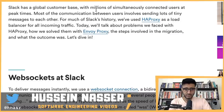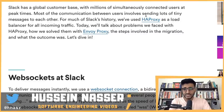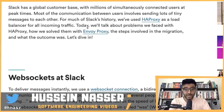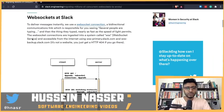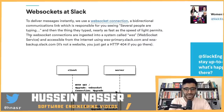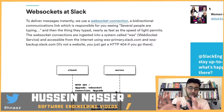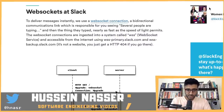Slack has a global customer base with millions of simultaneously connected users at peak time. Most of the communication between users involves sending tiny messages to each other. For much of Slack's history they've used HAProxy as a load balancer for all incoming traffic. Today we'll talk about problems they faced with HAProxy, how they solved them with Envoy proxy, the steps involved in migration, and what comes after. I've talked about WebSockets many times in this channel — I have a playlist, go watch that if you're interested.